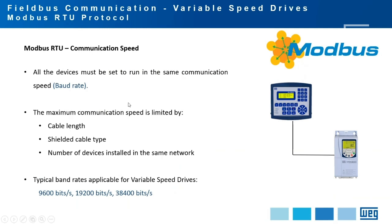Regarding communication speed, Modbus RTU requires all devices to use the same baud rate. The speed may vary according to cable length, cable type and shielding quality, and the number of devices in the network. Typical baud rates for variable speed drives go up to a maximum of 38,400 bits per second.